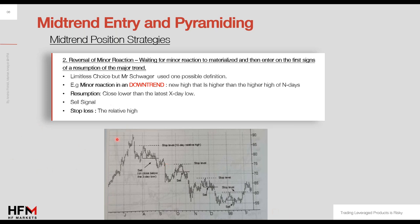In the downtrend example, we have lower lows and lower highs defining the downtrend. A minor reaction in a downtrend could be defined as a new eight-day high — a sell signal — which will occur when price closes below the most recent four-day low.